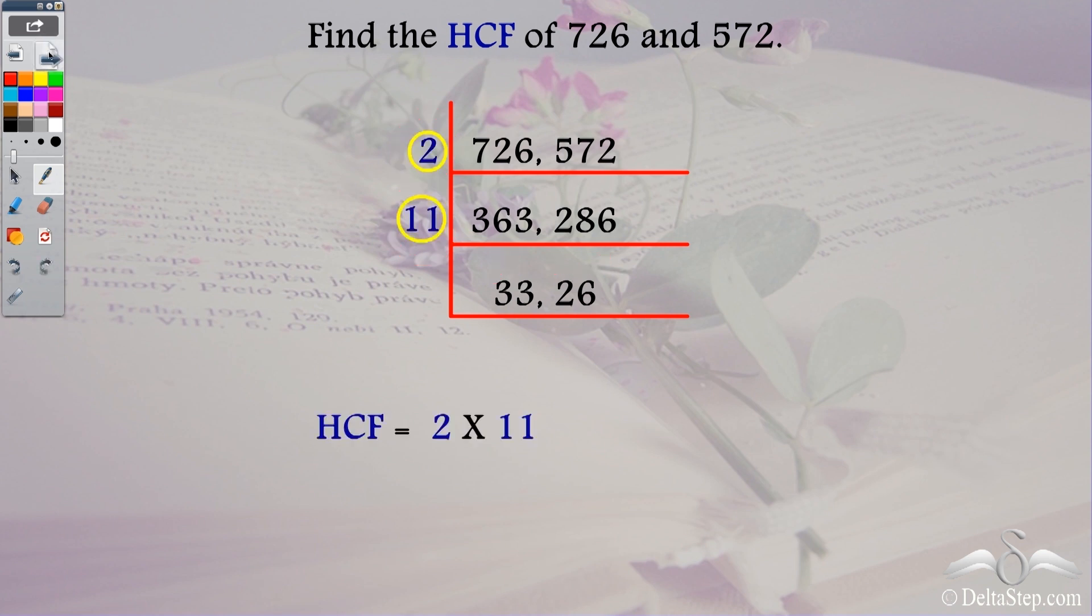So the HCF is 2 into 11 which is 22. So the HCF of 726 and 572 is 22.